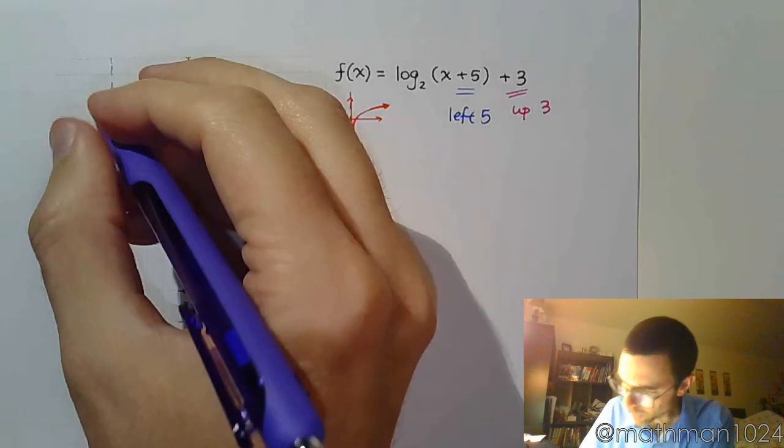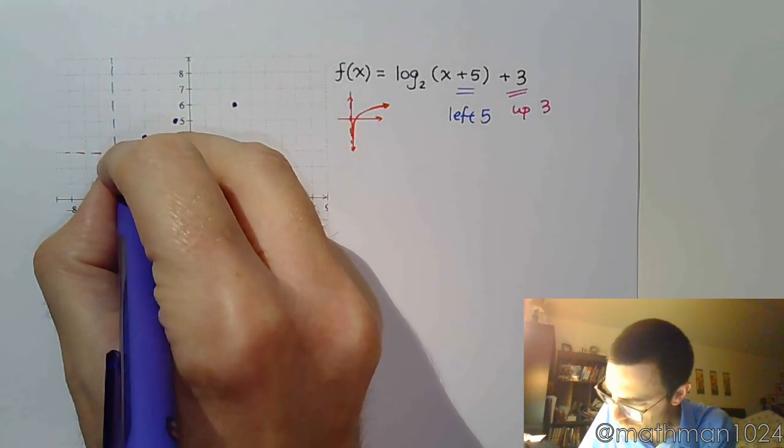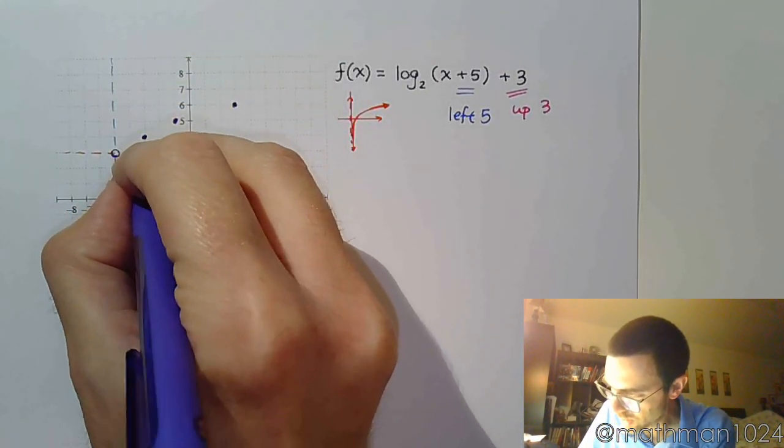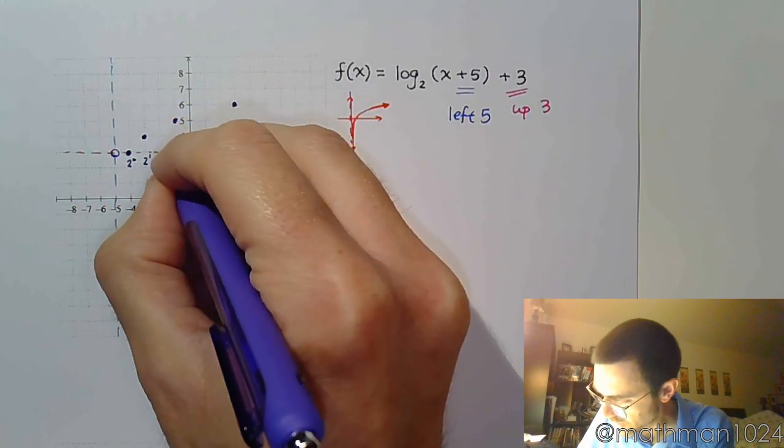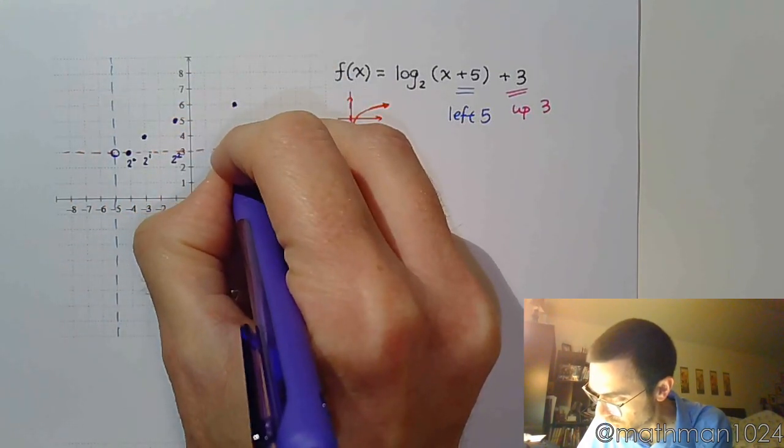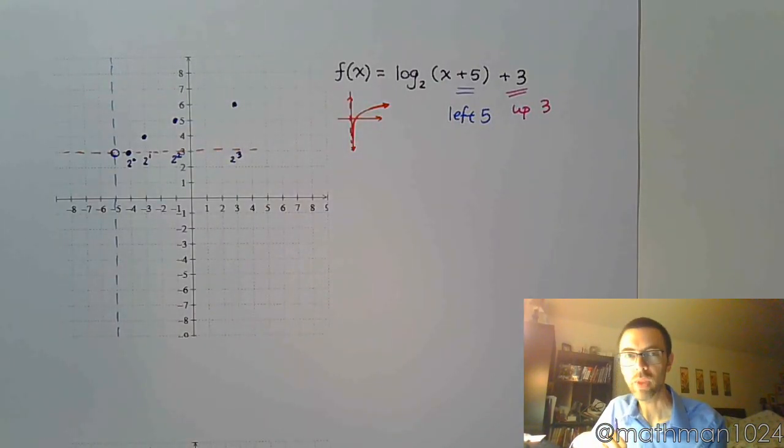So here, this is 2 to the 0. This is 2 to the 1st. This is 2 squared. And this is 2 to the 3rd.